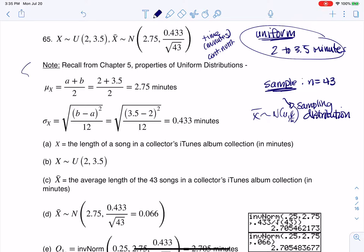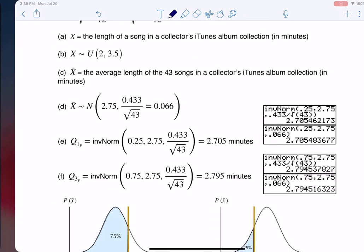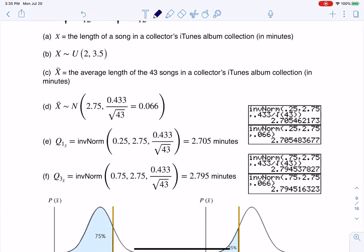So I'm going to start with part A. Part A is just saying what's the variable, and it's the length of the song in this iTunes album collection, and the units are minutes, and it told me it was uniformly distributed.